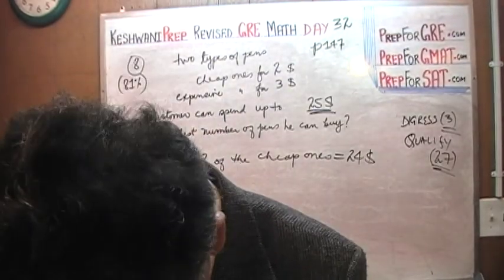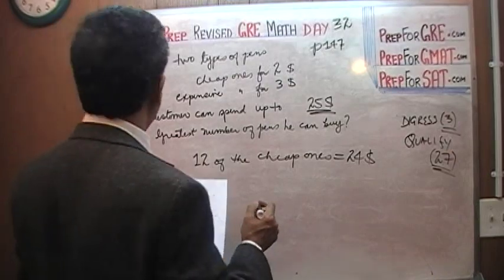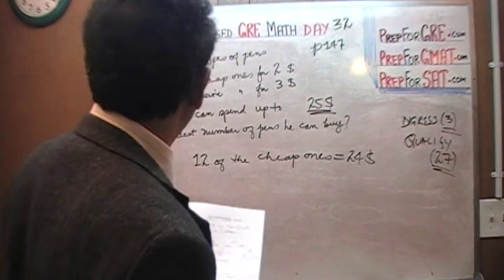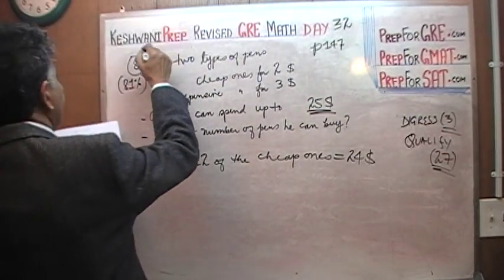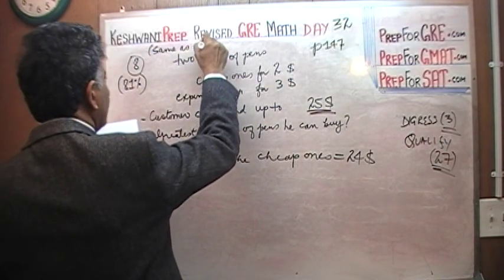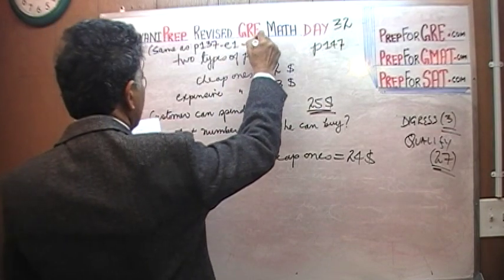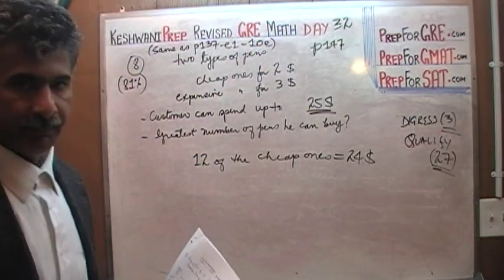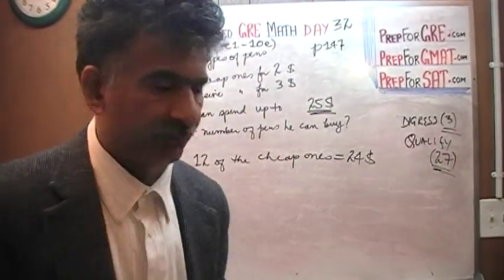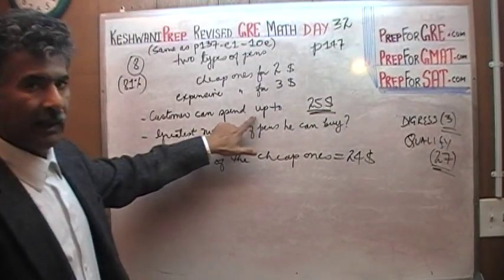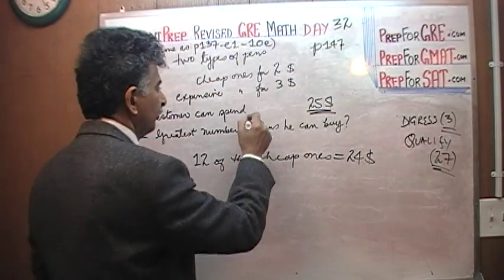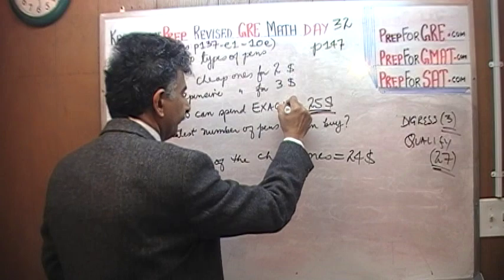This question is the same as the one, let's put it way up here. Same as the one that you will find on page number 137 in exam number 1 of the 10th edition. And in that exam, in the old exam, in the old version, when it appears, this question was worded a little bit differently. The customer can spend not up to $25, which is why I left so much room here, but we were told that he has to spend exactly $25.